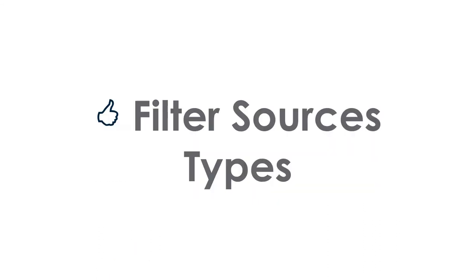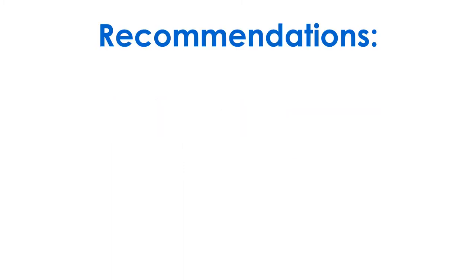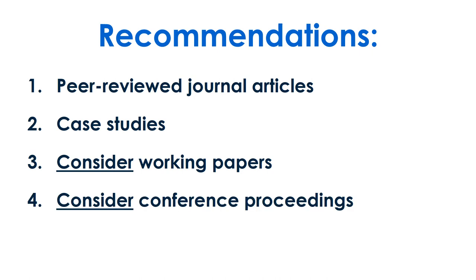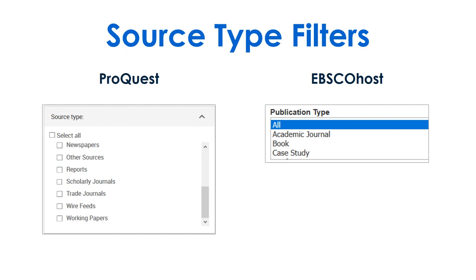Once you've adjusted your search terms so your search results are on topic, you're ready to filter your sources. Scholarly business sources include peer-reviewed journal articles, case studies, and also working papers and conference proceedings, which are research which hasn't been published yet. Find source type filters under the advanced search in most business databases.